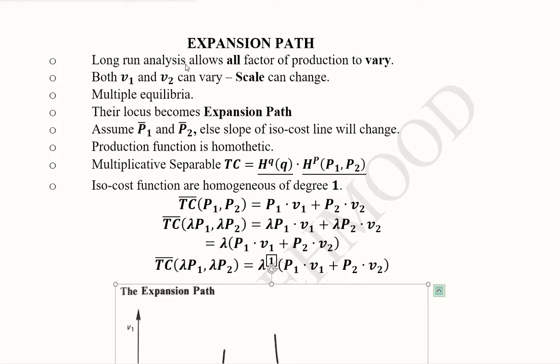So it's about the long run analysis, and in the long run analysis we know that all of the factors of production are allowed to vary. So it means that we will allow v1 and v2 both to vary. And when both of them vary, it means that the scale is changing. The scale of production will be now different.